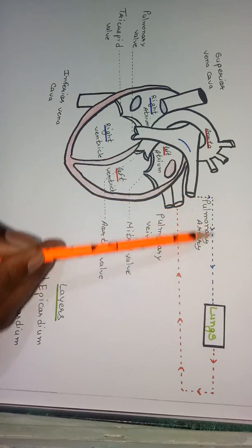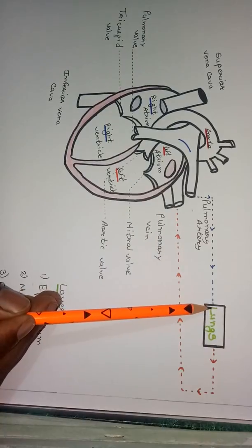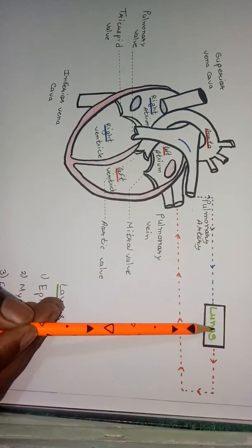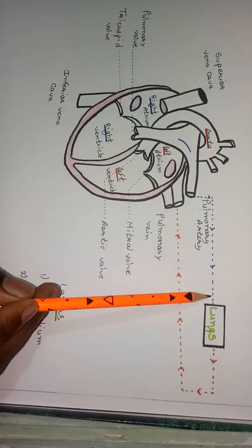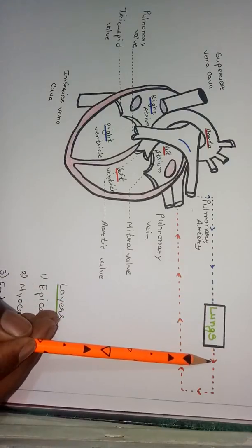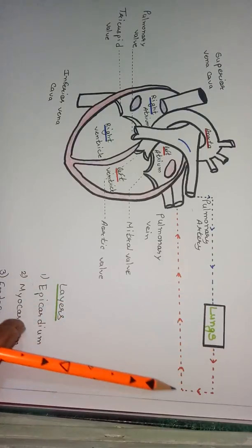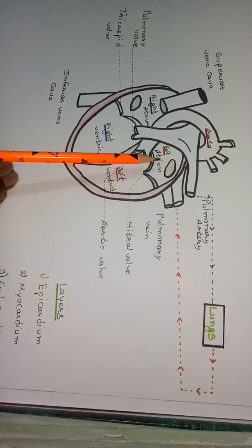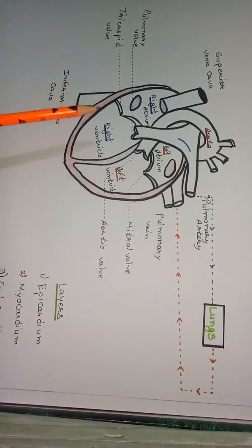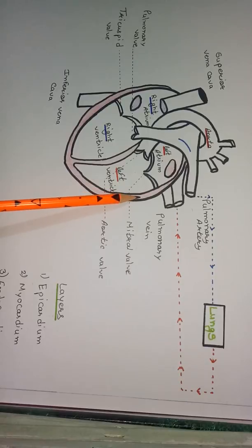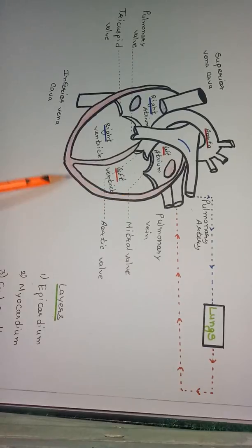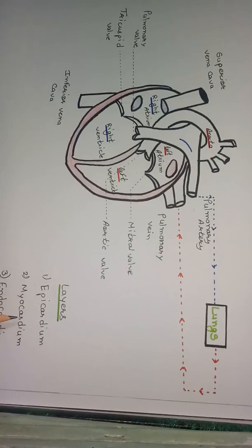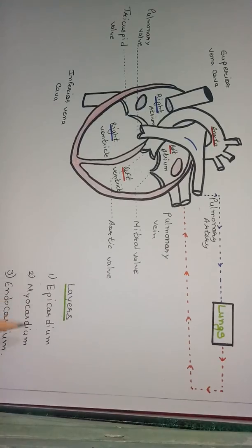This is the pulmonary vein and this is the pulmonary artery. The pulmonary artery carries deoxygenated blood and supplies it to the lungs, where with the help of the respiration process, deoxygenated blood gets converted into oxygenated blood. That oxygenated blood then comes back with the help of the pulmonary vein into the heart, entering the left atrium. The heart consists of three layers: epicardium, myocardium, and endocardium.